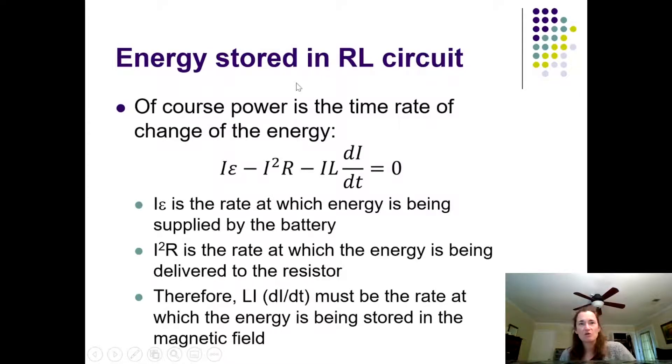Remember, power is the time rate of change of the energy. We said before that when you write your Kirchhoff's loop rule equation, it's really just a restatement of conservation of energy. I times the EMF is the rate at which the energy is being supplied by the battery, and then the inductor and the resistor will dissipate and store the energy provided by that battery. I squared R is the rate at which the energy is being delivered to the resistor, which is then converted to heat, and then L dI/dt must be the rate at which energy is being stored in that magnetic field.